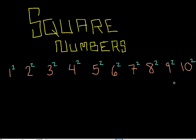I was thinking about square numbers today and I realized a little trick that might help you out. Just to review: what is a square number? Well, all these numbers — if you see over here, one through ten — I have written with a little two above them, which means squared.